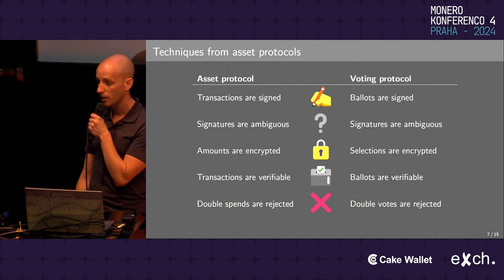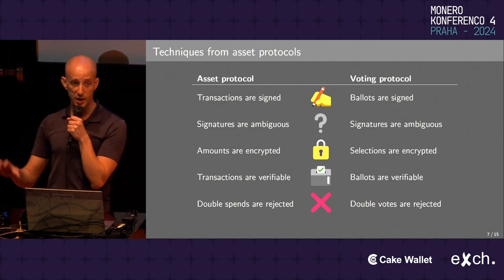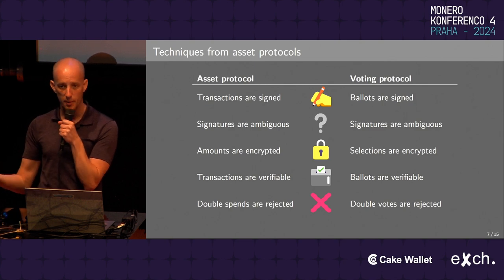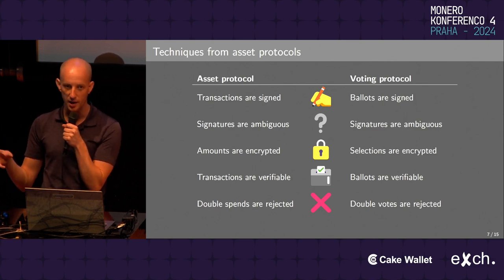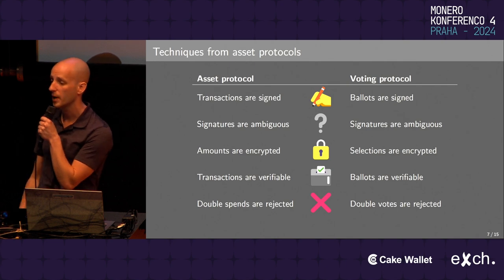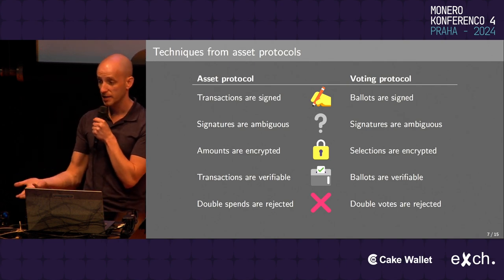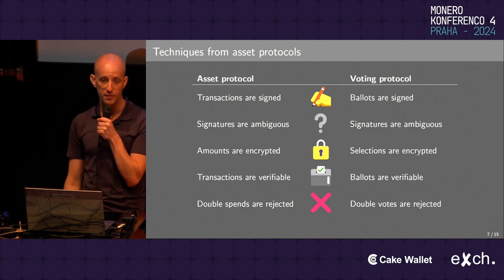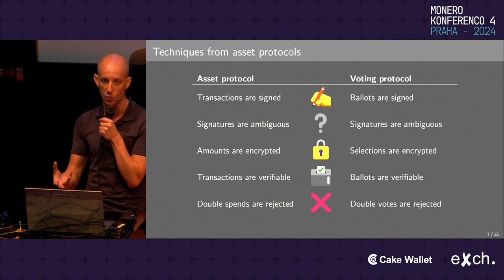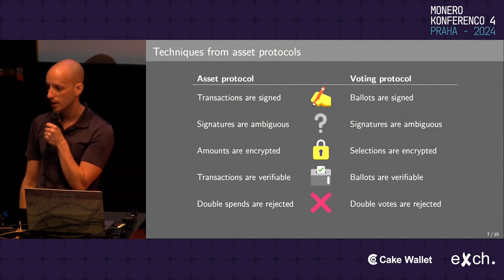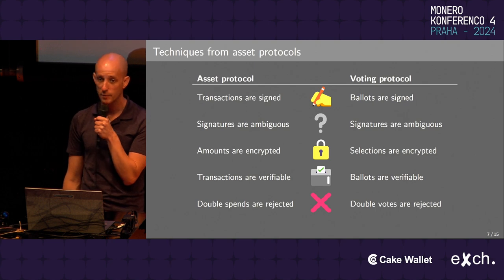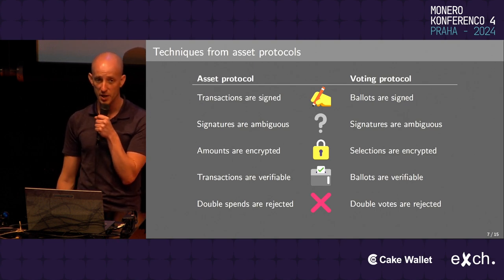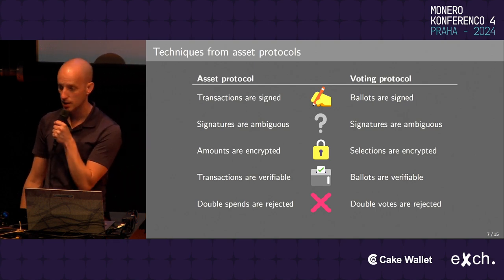In privacy-respecting digital asset protocols, amounts and other details are encrypted in a structured way that still allows verifying properties like transaction balance — you haven't created money out of thin air. In a digital voting protocol, the selections — which candidates or options are being chosen — will be encrypted in a similarly structured way so we can reason about them. Ballots need to be verifiable so we know the election was conducted honestly.